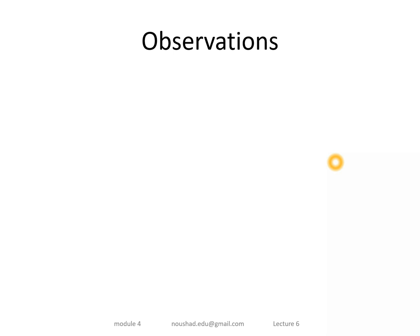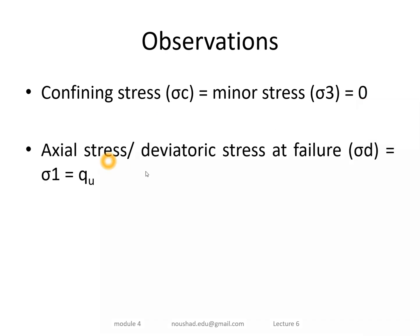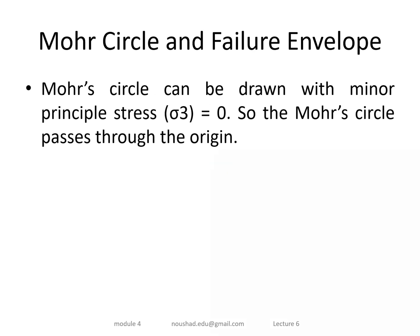In the UCC test, there is no confining stress: sigma 3 equals zero. The axial stress and deviator stress at failure is sigma 1, the major principal stress. Since sigma 3 equals zero, sigma 1 equals Q_u, the unconfined compressive strength. With sigma 3 equals zero, we can draw the Mohr circle and failure envelope to determine shear parameters.